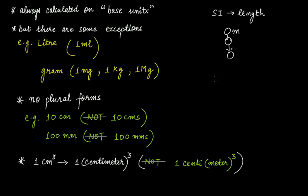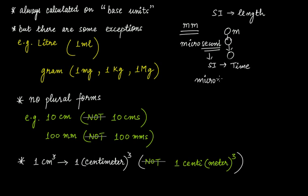But there are some exceptions. For example, we calculate millisecond — second is the SI unit of time — and we do calculate microsecond. We do not calculate 'microsecond' based on something other than second. So it is always calculated on base units, but there are some exceptions.